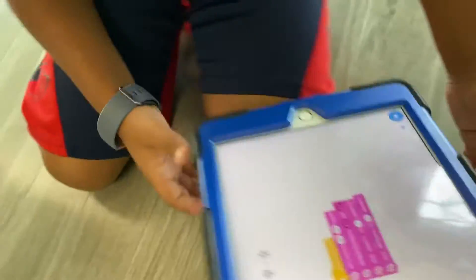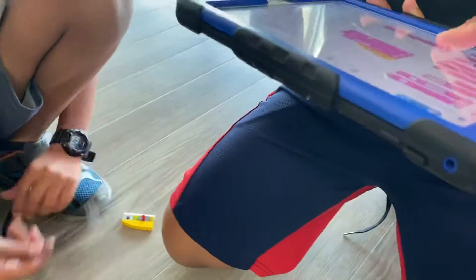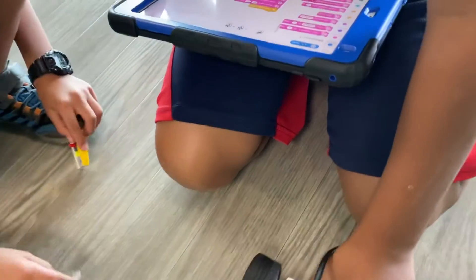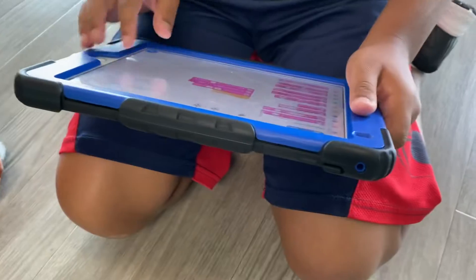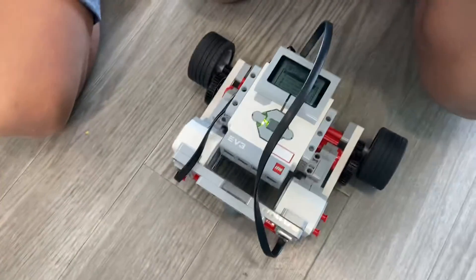The wheels. All right, can we also take a look at the code? Yeah, the code was different. Does that make sense about gearing up and gearing down? Okay, good. After this, we're gonna add fancy stuff to it.